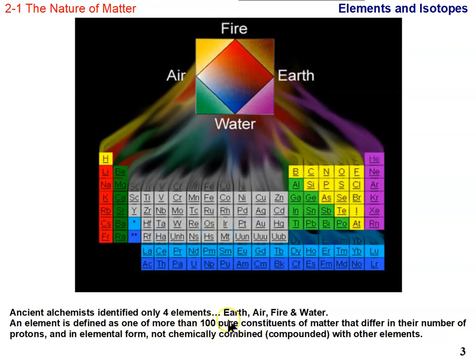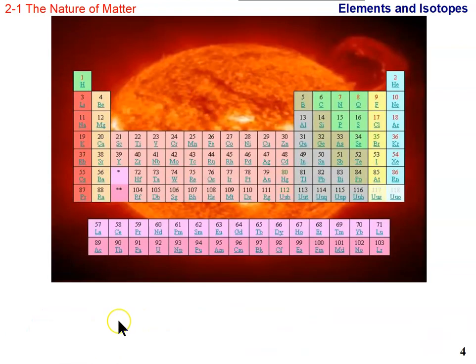An element is defined as one of the pure constituents of matter that differ in their number of protons. In their elemental form, not chemically combined, we're talking pure. So a pure element is made up of only one kind of atom—pure nitrogen, pure carbon, or pure oxygen. The elements are represented on the periodic table with letter symbols of one or two letters, and they're arranged in sequence by atomic number.